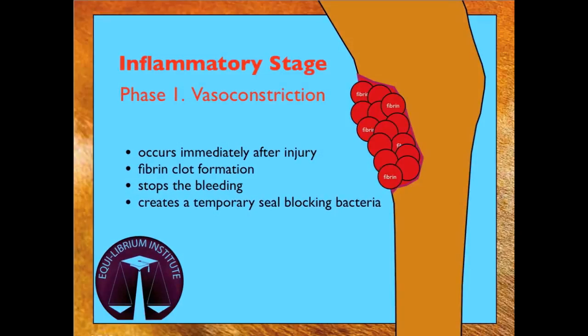The inflammatory stage has two phases. The first phase, vasoconstriction, occurs immediately after the injury. Vasoconstriction serves to stop the bleeding and create a temporary seal blocking bacteria from entering the wound by creating a fibrin clot.